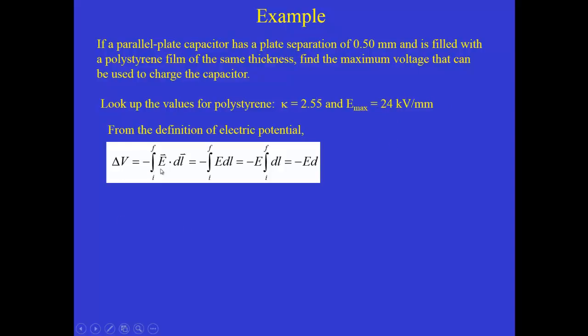So we want to now connect this quantity to the electric potential that you would have when the electric field would be 24 kilovolts per millimeter. So delta V is defined as minus integral E dot DL. Now, in between the plates of a capacitor, if we just take a simple path from one plate to the other along the field direction, then E dot DL becomes E times DL.